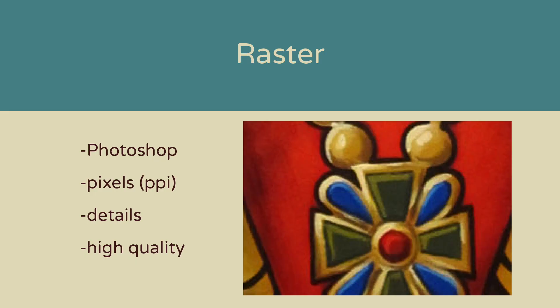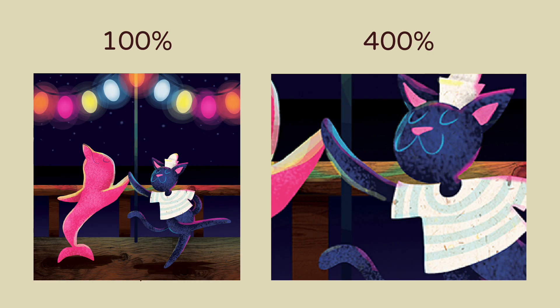Adobe Photoshop is probably the most popular program used to edit or create raster images. Raster images are created using a set amount of pixels, which are basically just colored squares. The amount of pixels your image has is related to the pixels per inch that you set as your resolution. Raster images can have a lot of detail and be very high quality, and generally allow you to create a really handmade look.